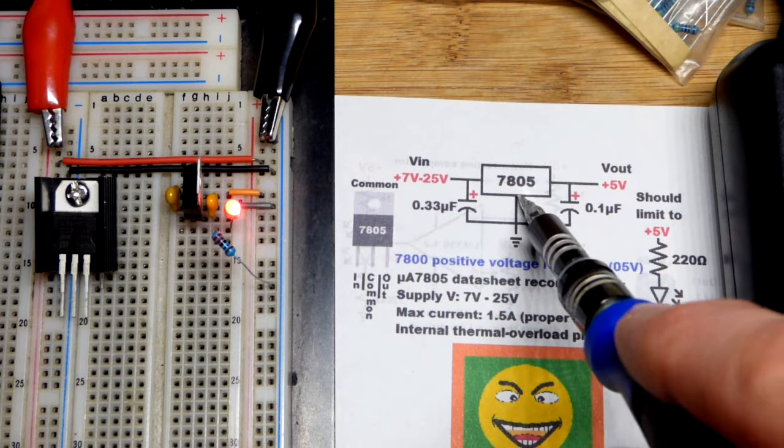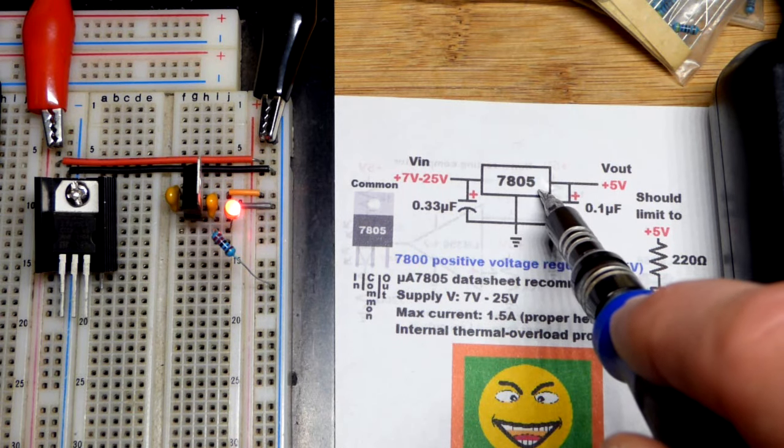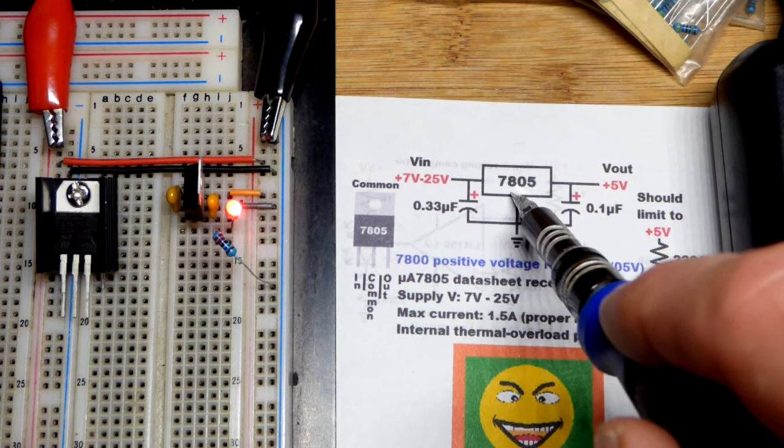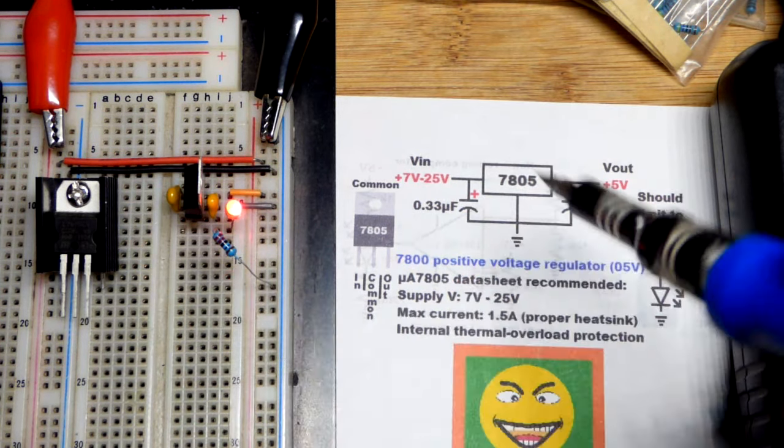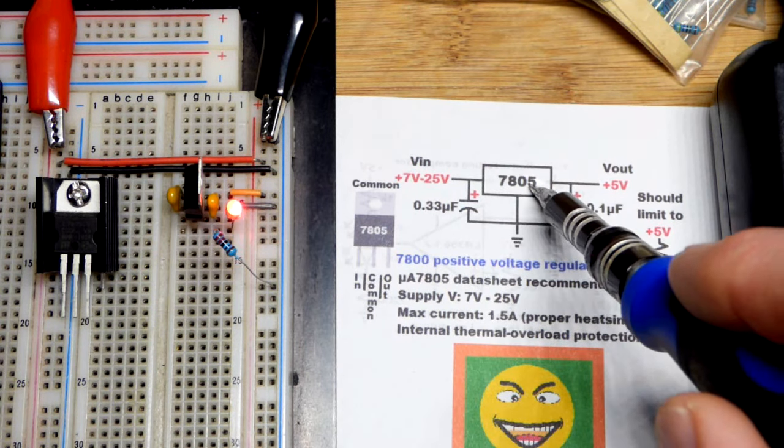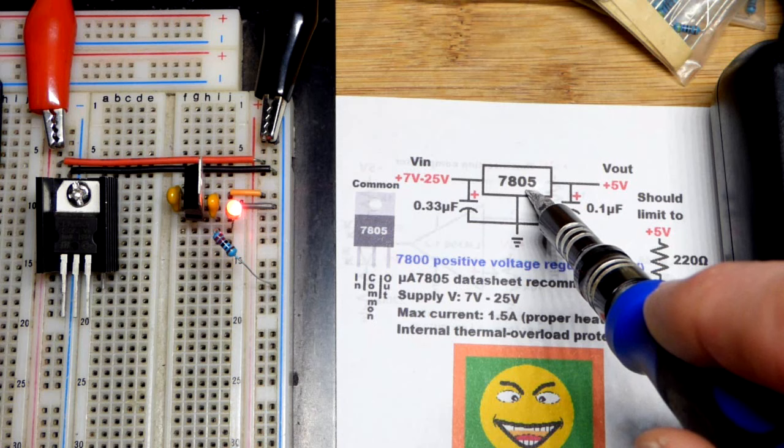In this video we're going to look at the voltage regulator, the 7805. This is a 7800 series integrated circuit. Although there's only three pins, there's circuitry built into it, and the 05 stands for 5 volts.